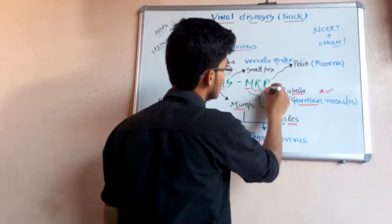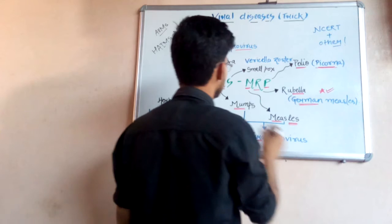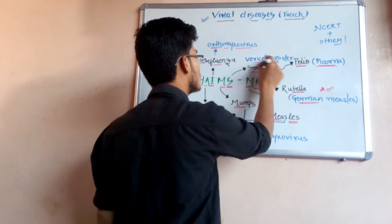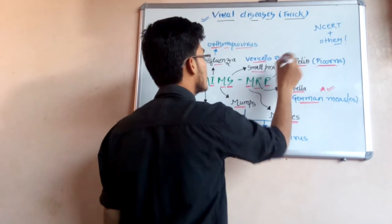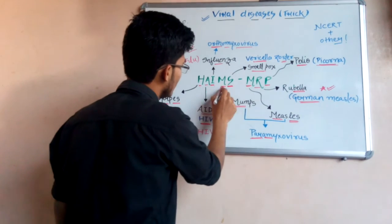P simply means polio, which is caused by picornavirus. We have not talked about S, that is smallpox, which is caused by varicella zoster. So these are some common viral diseases: H-A-I-M-S M-R-P, that is AIMS MRP.